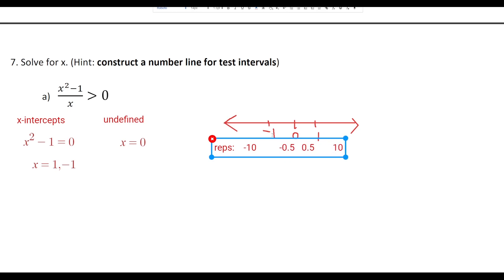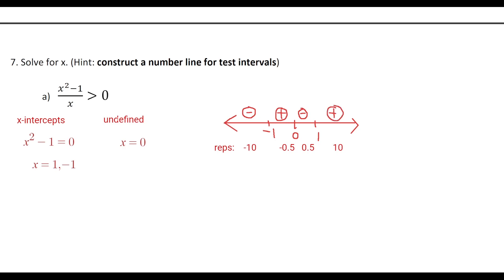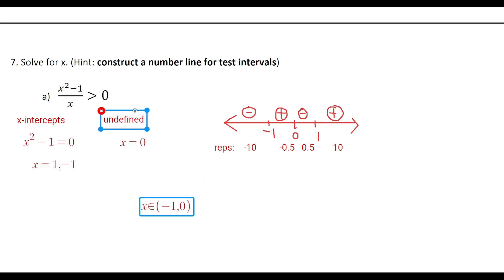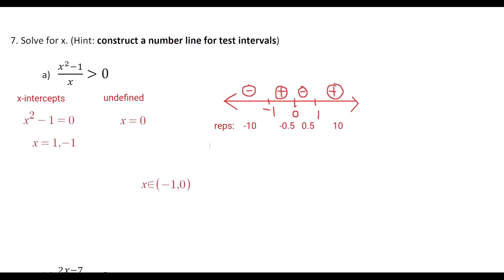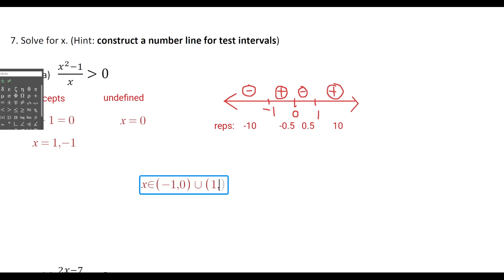Testing: x = −10 → (positive)/(negative) = negative; x = −0.5 → (negative)/(negative) = positive; x = 0.5 → (negative)/(positive) = negative; x = 10 → (positive)/(positive) = positive. Since we want where the expression is greater than zero, the solution is the positive intervals: x ∈ (−1, 0) ∪ (1, +∞). Endpoints are excluded since there's no 'or equal to.'